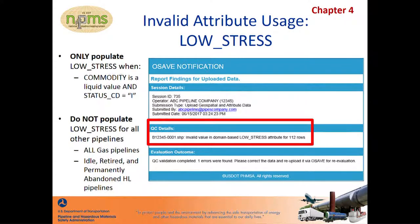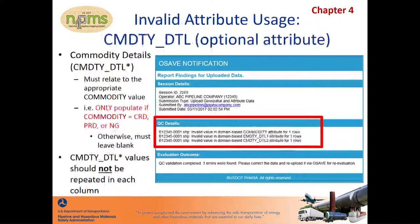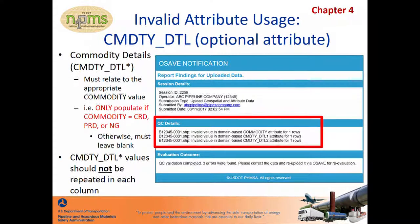The submission is not complete and will not be placed in the NPMS staff queue until all corrections have been addressed and the resulting QC report logs a passing status. Another combination of values incorrectly submitted via OSAVE is related to the Commodity Details field, which may only be populated with the corresponding acceptable values listed in Figure 3-1 of the NPMS Operator Standards for crude, product, or natural gas pipelines. In addition, the commodity detail values should not be repeated under each detail column — each commodity detail field is intended to hold unique acceptable values.